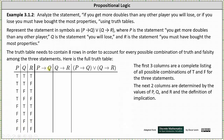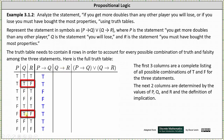'If p then q' is false only when p is true and q is false — which occurs in rows three and four; everywhere else it is true. 'If q then r' is false only when q is true and r is false — which occurs in rows two and six; everywhere else it is true.